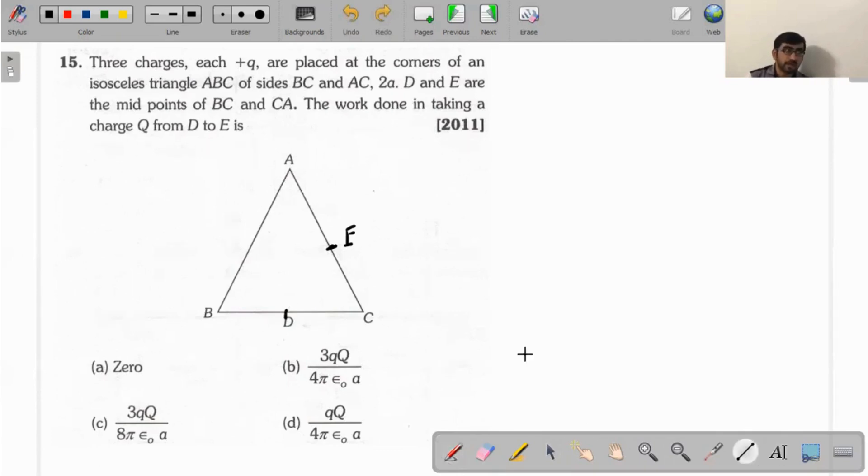What will be the work done in this case? To solve this, the key is that we have an isosceles triangle where BC and CA have equal length. D is the midpoint of BC, E is the midpoint of AC, and all corners have the same charge +Q. For point D, there's a +Q at some distance...